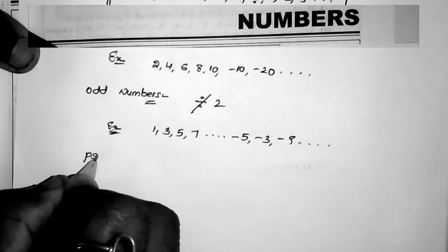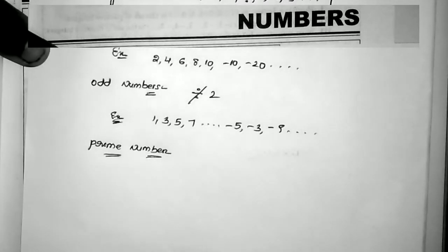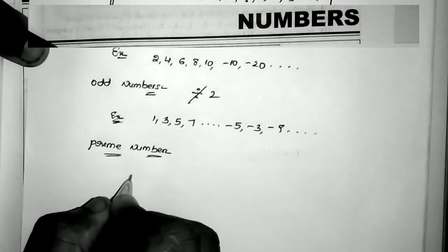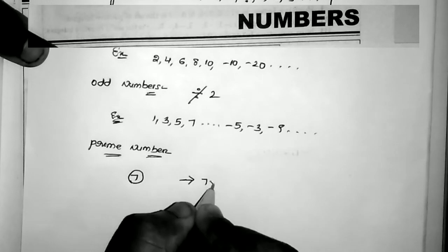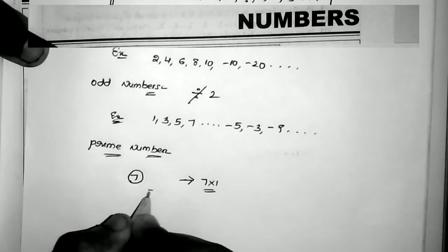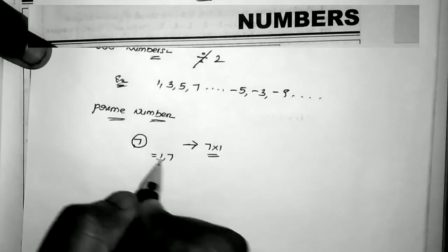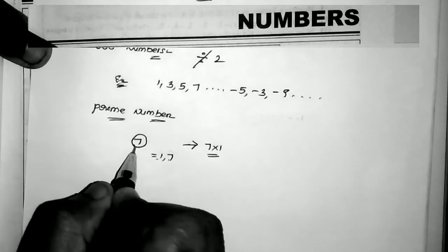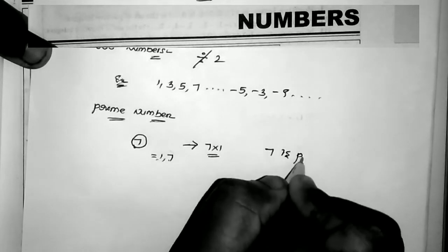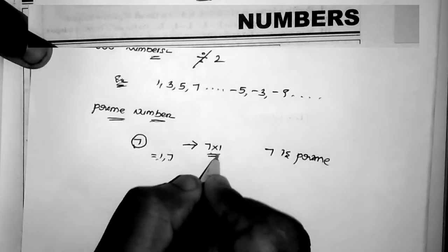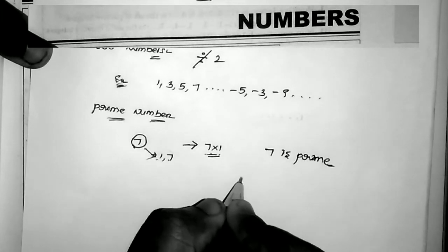Now prime numbers. A prime number is a number which is divisible by 1 and itself only. For example, take the number 7. What are the factors of 7? Only 1 and 7 — that is, 7 equals 7 into 1. The number is divisible by 1 and itself only. So 7 is called a prime number since its only factors are 1 and 7.